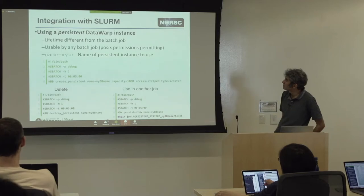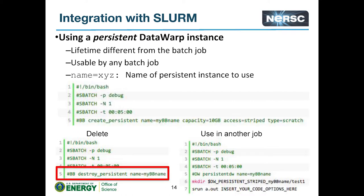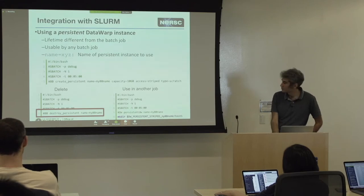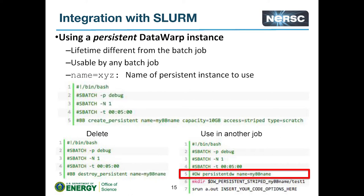For persistent DataWarp instances, you create something and give it a name, which you can then use in subsequent jobs to access the same space. You can delete it when you don't need it anymore, but you have to do so via a batch job. You can also use the interactive queue for submitting these kinds of jobs. To use a persistent instance in another job, you use a line with 'persistent_dw' instead of 'jobdw', followed by the name you defined earlier.